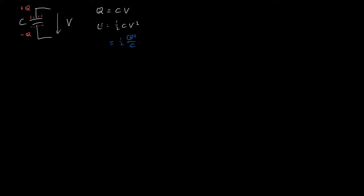Here comes the paradox. Consider a capacitor with capacitance C. It has a voltage of one volt across it. Its twin has also got capacitance C but zero volts across it. The energy on the left capacitor will be one half C times one squared, which is one half C. The energy on the right capacitor will be zero, so the total energy will be one half C.